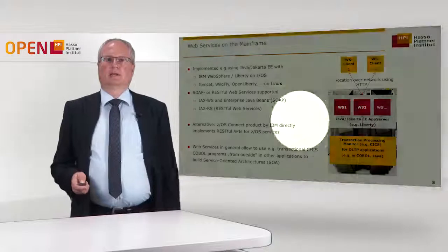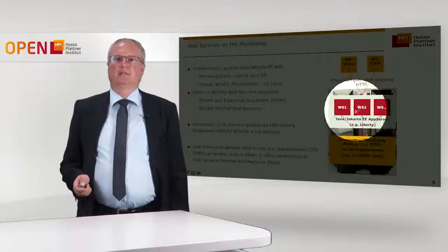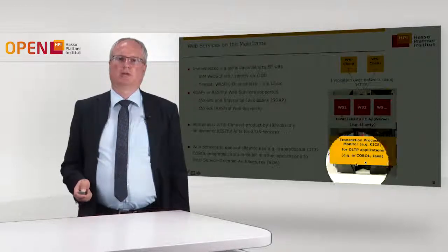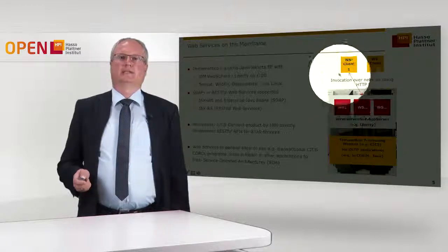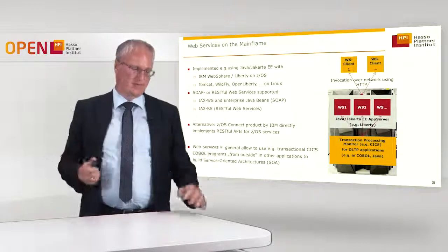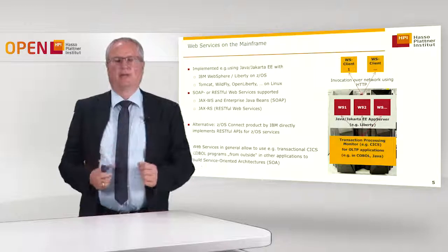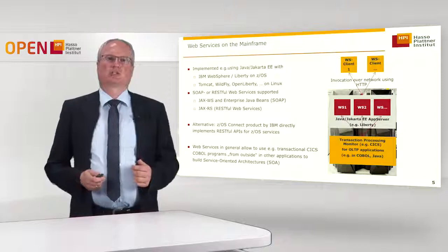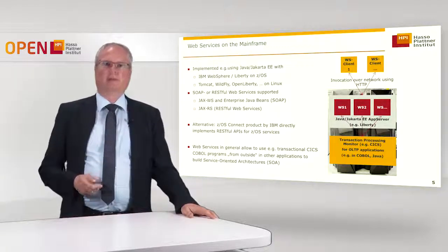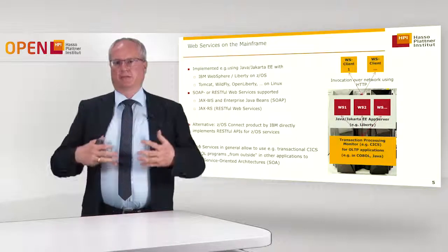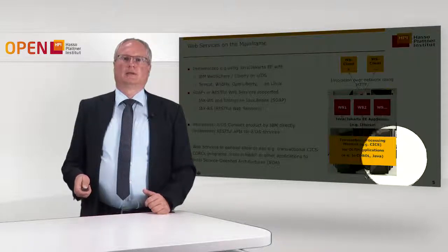The classical structure is running a Java EE application server with some EJBs, having clients call the mainframe using HTTP over the network. The EJB would then invoke CICS or another transaction processing monitor internally to call the traditional COBOL program. That COBOL program might access the database, does something, sends back the data, and the front-end sends it back to the client. There is also an alternative: a product called ZOS Connect, an IBM product that can be installed and opens up all the functions and CICS transactions on ZOS as RESTful web services directly, without needing a separate application server.